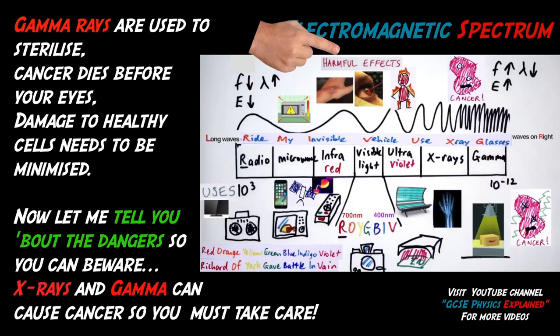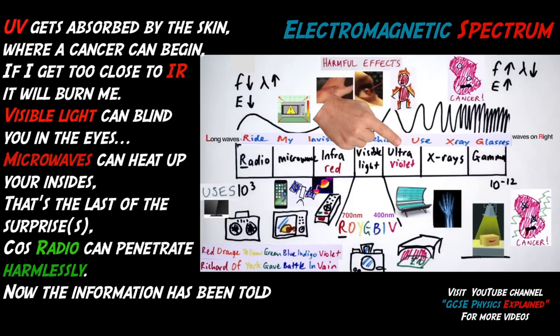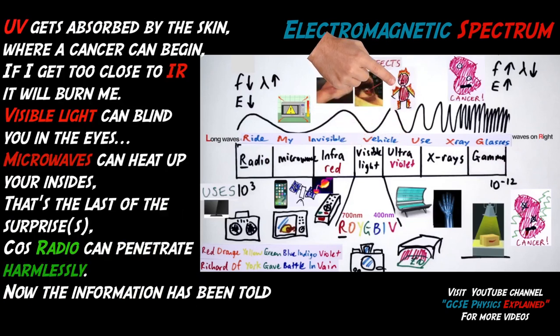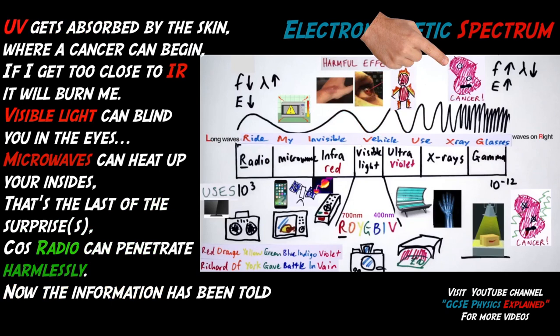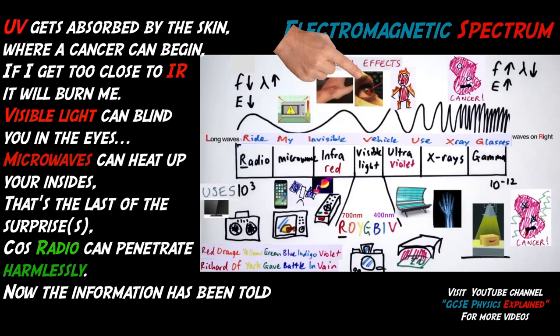Now let me tell you about the danger so you can beware. X-rays and gamma can cause cancer, so you must be care. UV gets absorbed by the skin, cancer can begin if I get too close to it, or it will burn. Visible light can blind you in the eyes. Microwaves can heat up your insides, that's the last of the surprise. Radio can penetrate harmlessly. Now the information has been told.